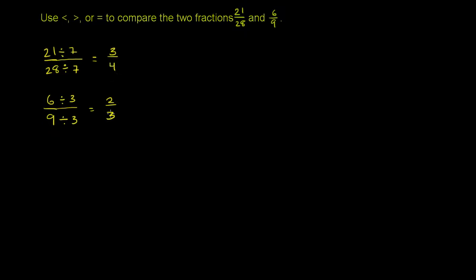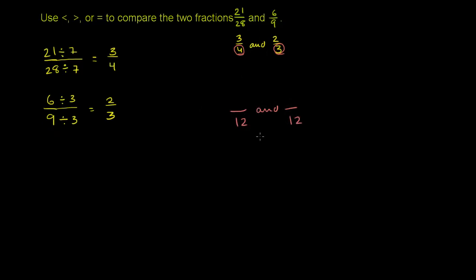So we really just need to compare 3/4 and 2/3. The real benefit of simplifying first is that it's now much easier to find a common denominator than with 28 and 9. The common denominator of 3/4 and 2/3 is going to be the least common multiple of 4 and 3. Since 4 and 3 don't share any prime factors, their LCM is just their product. So we convert both to something over 12.